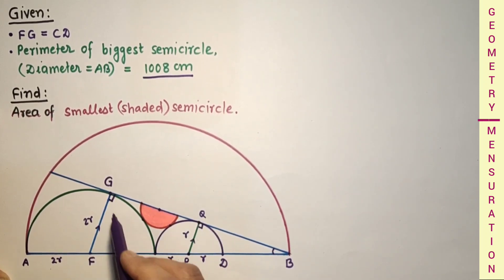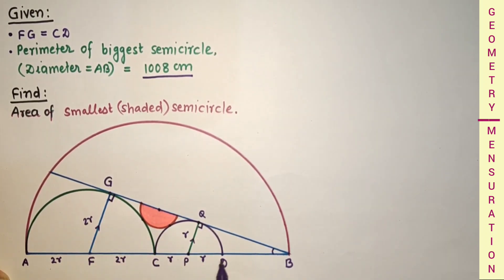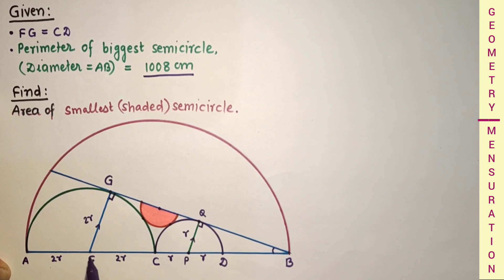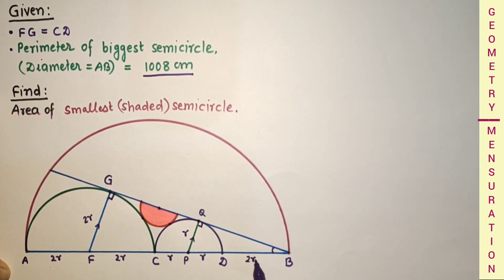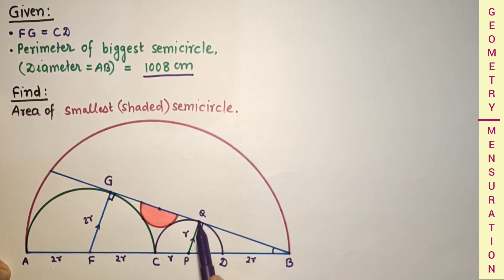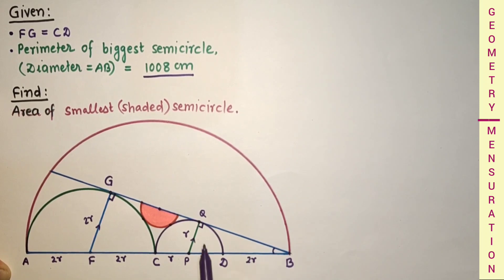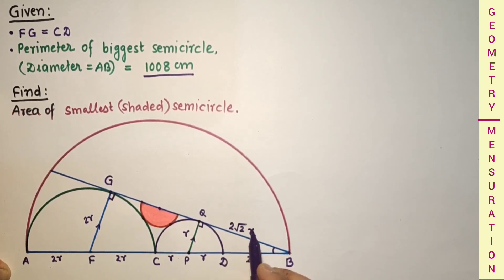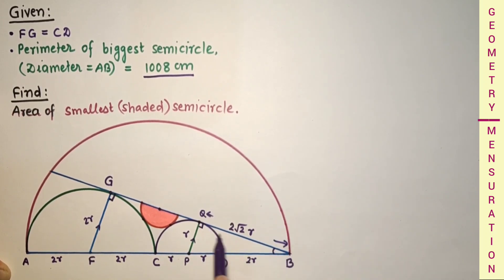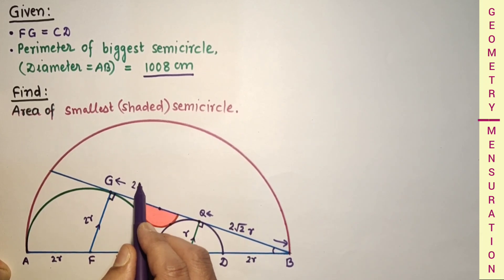Since BQ is half of BG, we can find the remaining lengths using the Pythagoras theorem. Q is the midpoint of FB, and PF is 2r, so PB will also be 3r, and this part is r, so the remaining part will be 2r. By using the Pythagoras theorem: PB is 3r, QP is r, so PB squared equals QP squared plus QB squared. Therefore 9r squared minus r squared gives QB squared equal to the square root of 8r squared, which is 2√2·r. Similarly, GQ will also be 2√2·r.